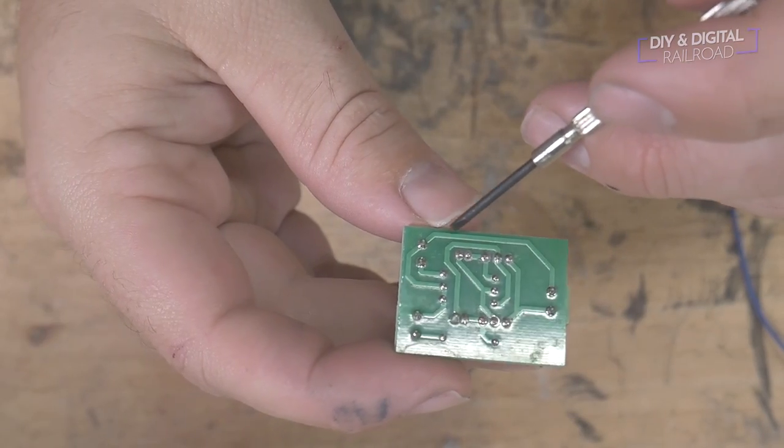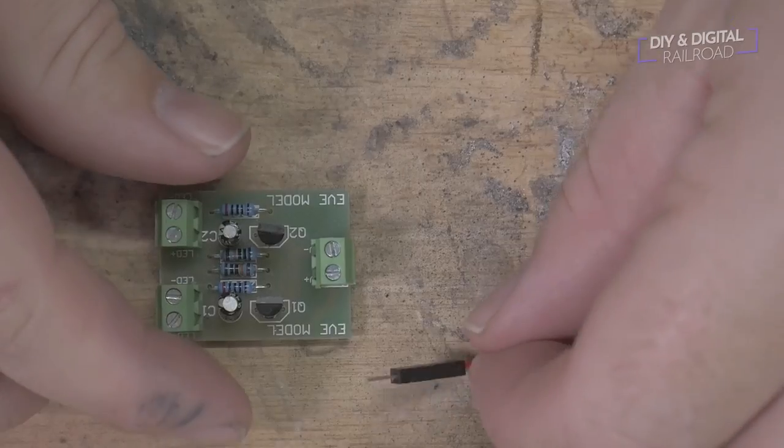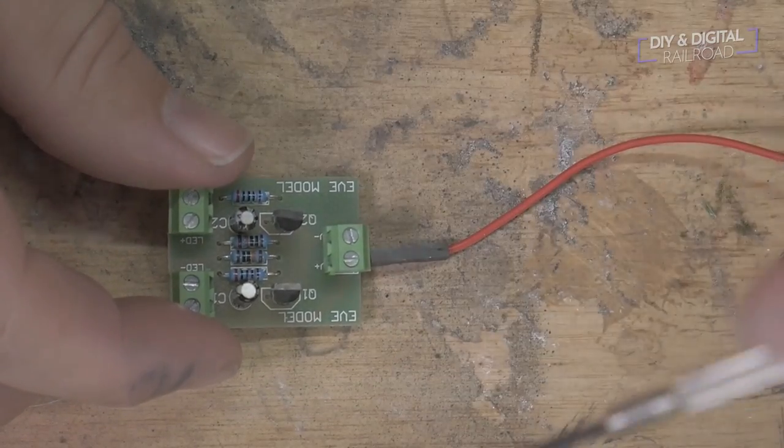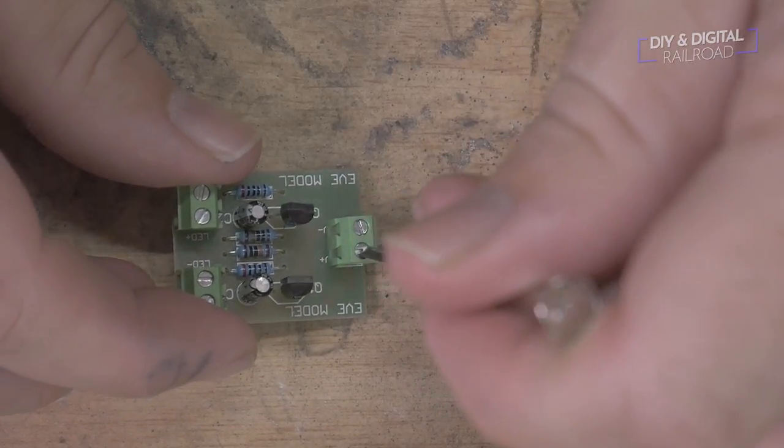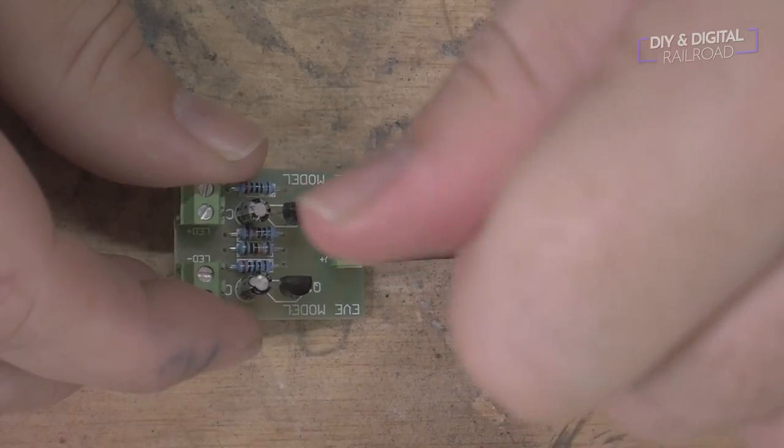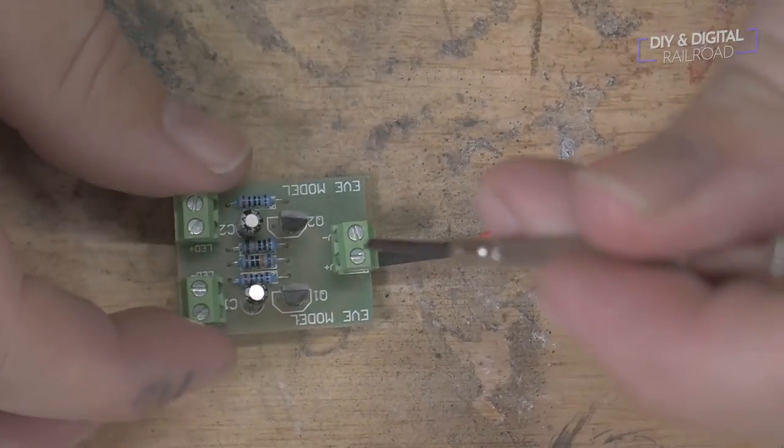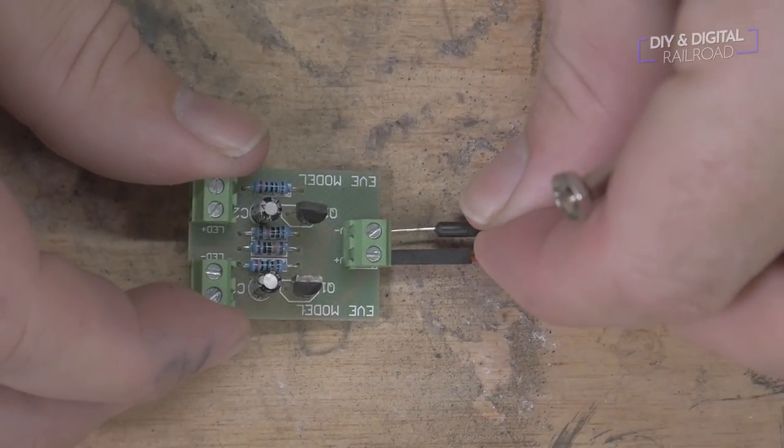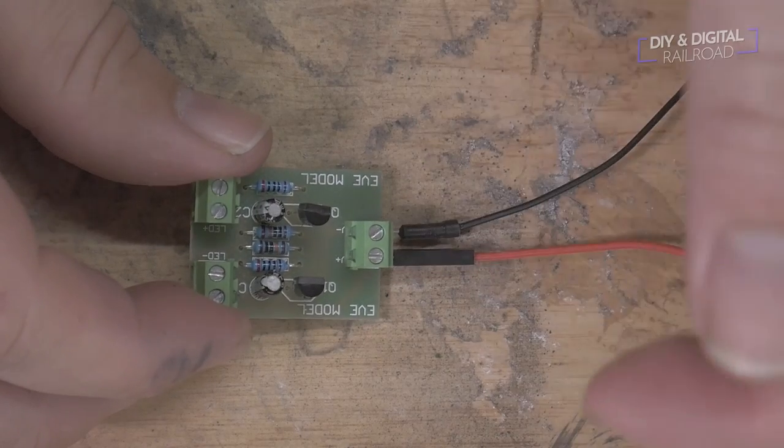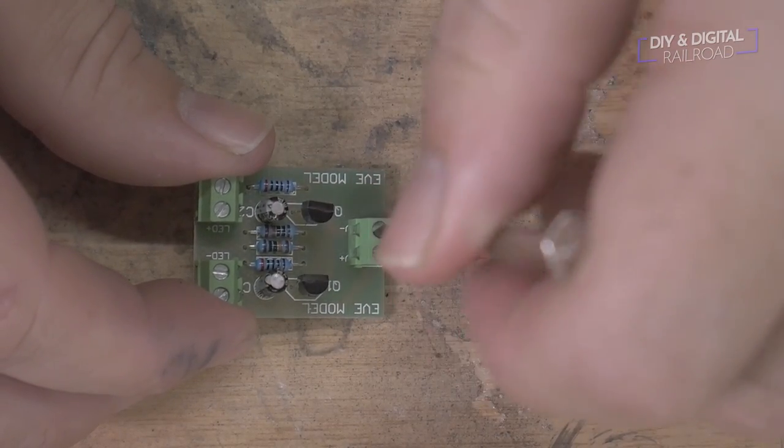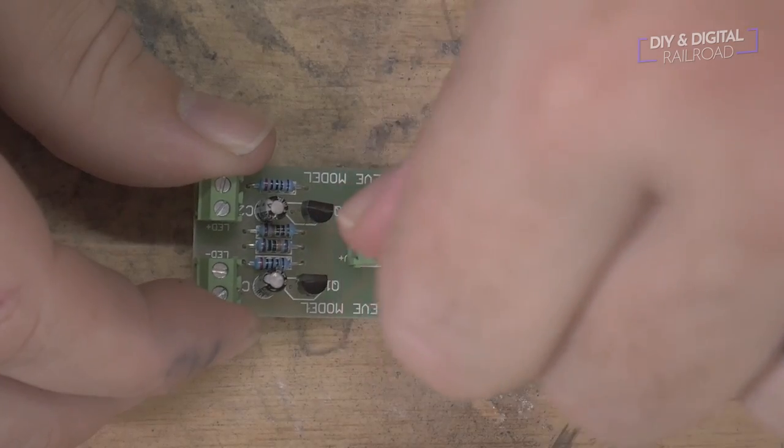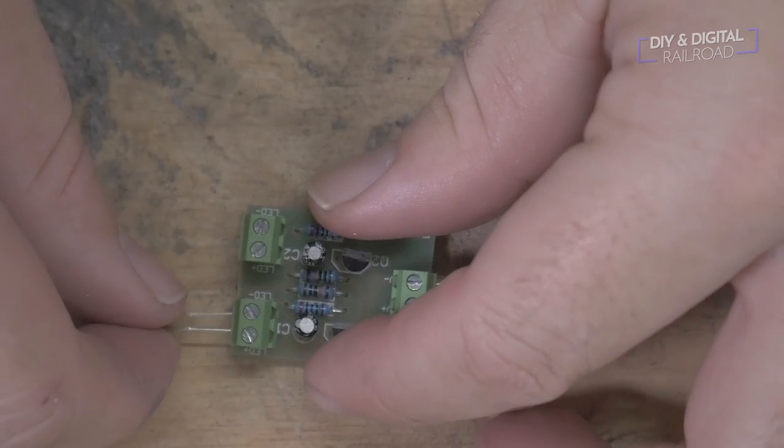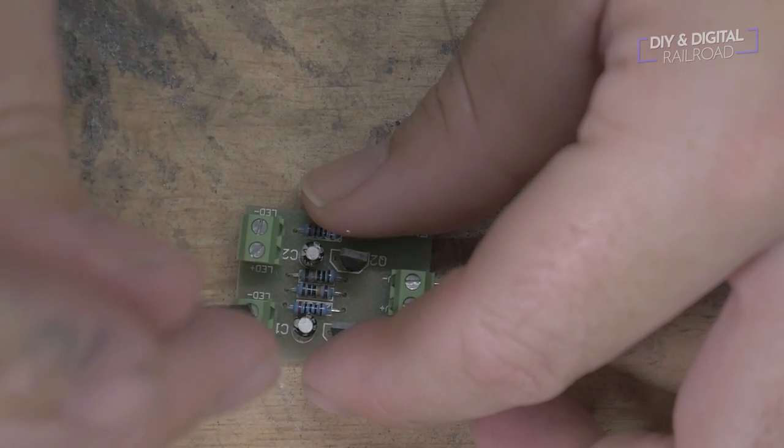We start off by connecting our power leads to the flasher board. Then we attach our LEDs. If you were installing this on your layout, this is where you'd hook up your signals.